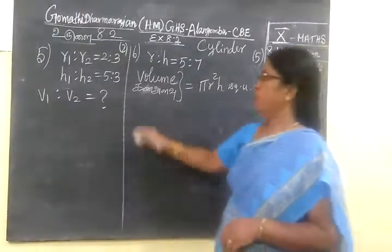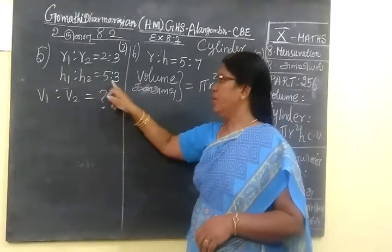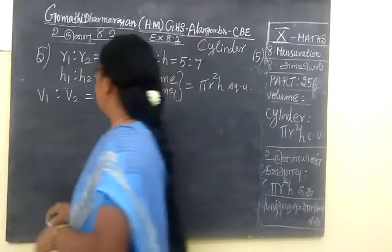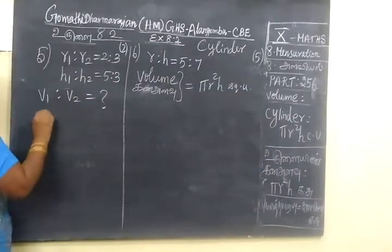R1 is to R2 equal to 2 is to 3. H1 is to H2 5 is to 3. We have to find V1 is to V2.